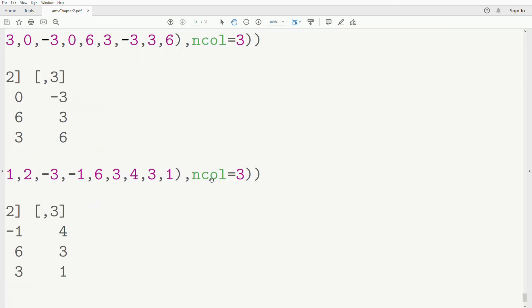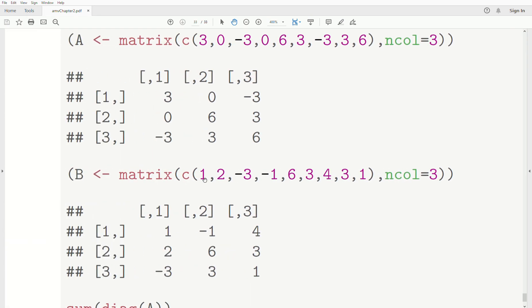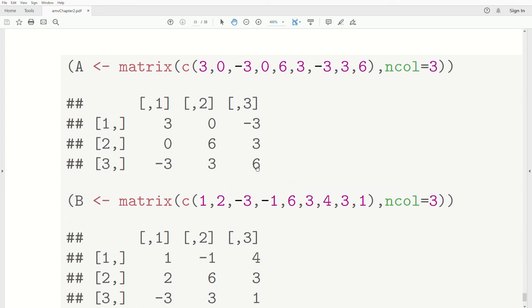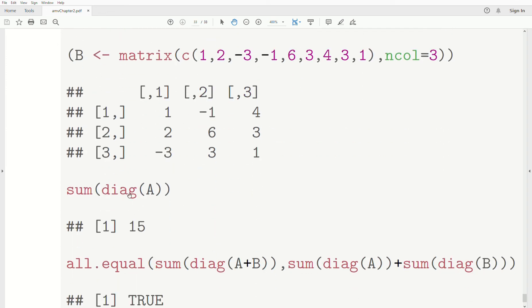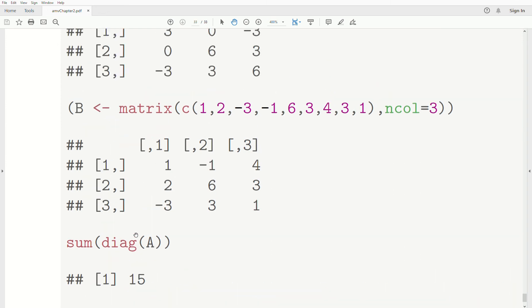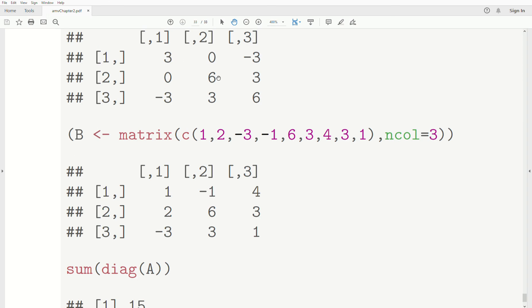And how do we take the trace of a matrix in R? Now there are packages that have the trace built in. And one of the advantages of that is when you take the trace of a matrix, you need it to be a square matrix. So those functions check to make sure it's square. What I'm getting ready to show you doesn't do that. You just have to make sure you know it. So we have two matrices, A and B. And if you take the diag of A, which grabs those diagonal elements and add them, that's the trace. So it's 15. So three plus six is nine plus six is 15. Boom.